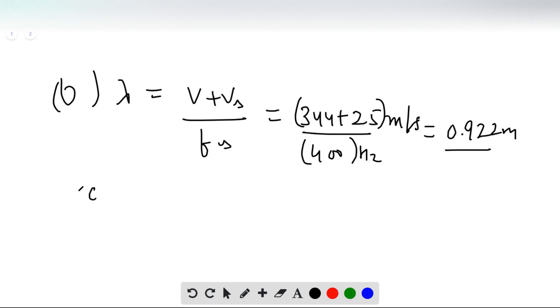Going to part C, the frequency of the locomotive when it's not moving equals V over lambda, which is 344 meters per second over 0.798 meters, equals 431 Hertz.